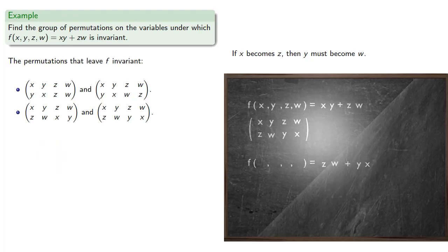Or, maybe x could become w. Again, in order to get this zw product, that means y has to become z. And our last two variables can either become x and y, or they could become y and x.